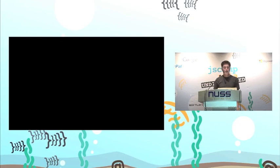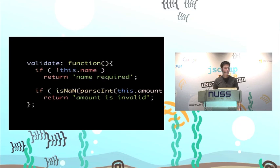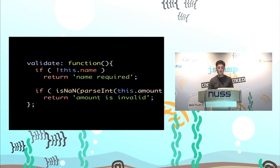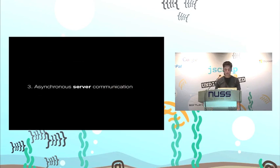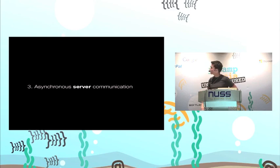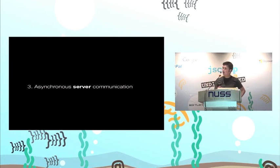Validating in Backbone and Spine is very simple. All you need to do is return a string from a validate function on the model if the validation fails. It's super simple.